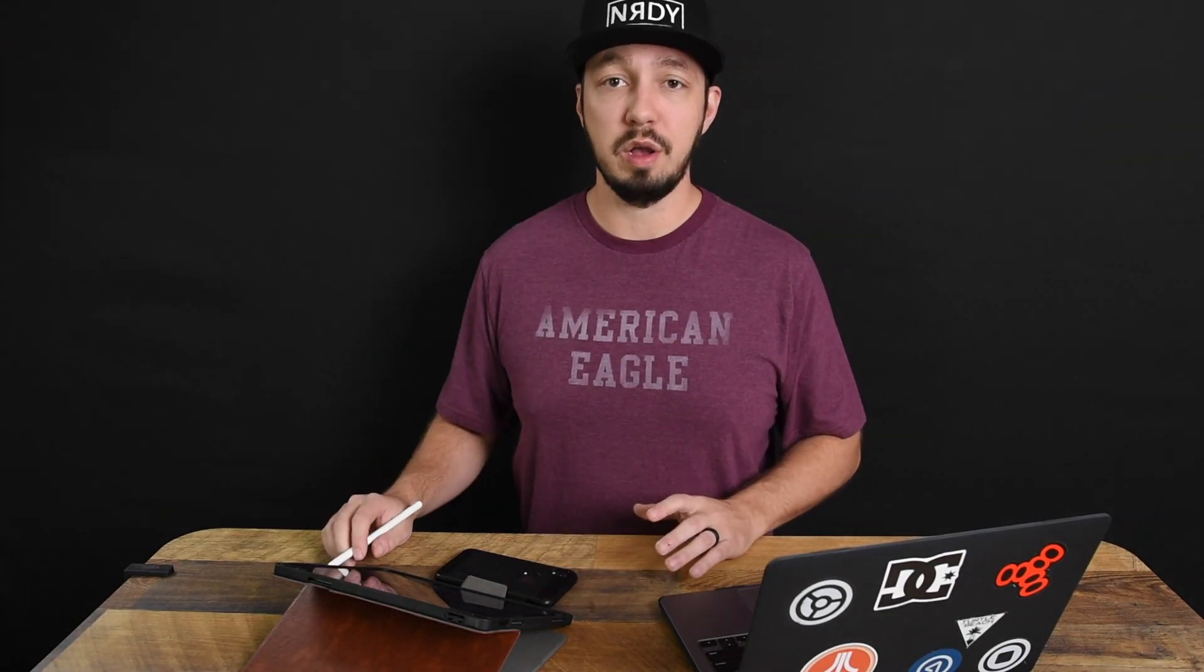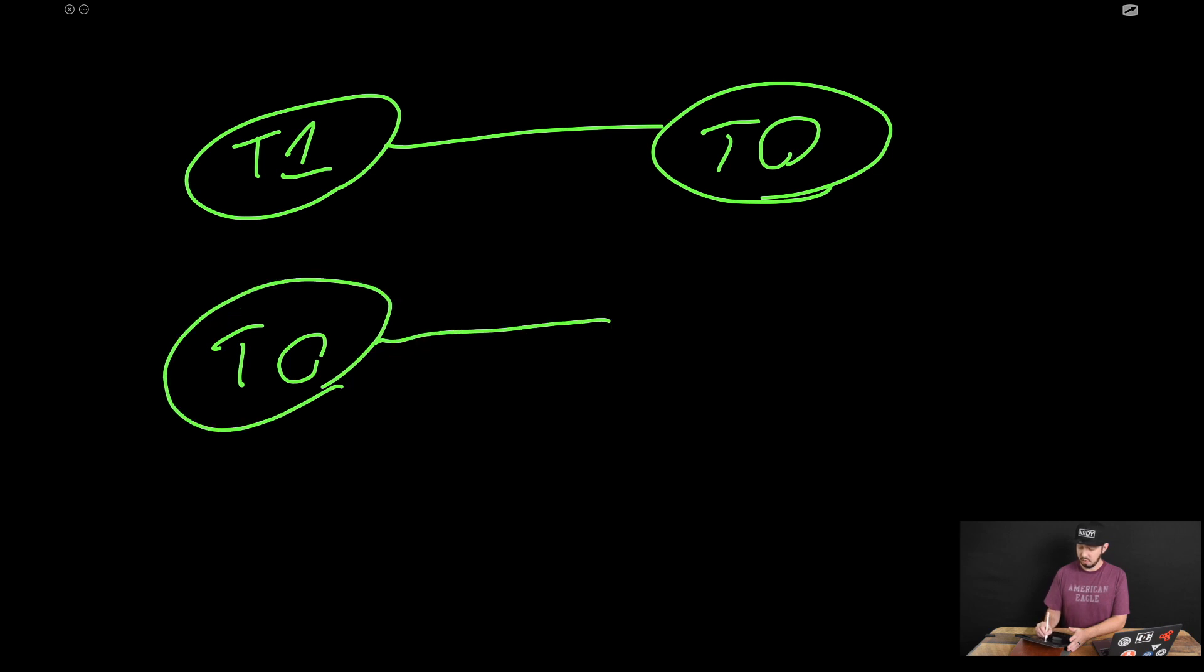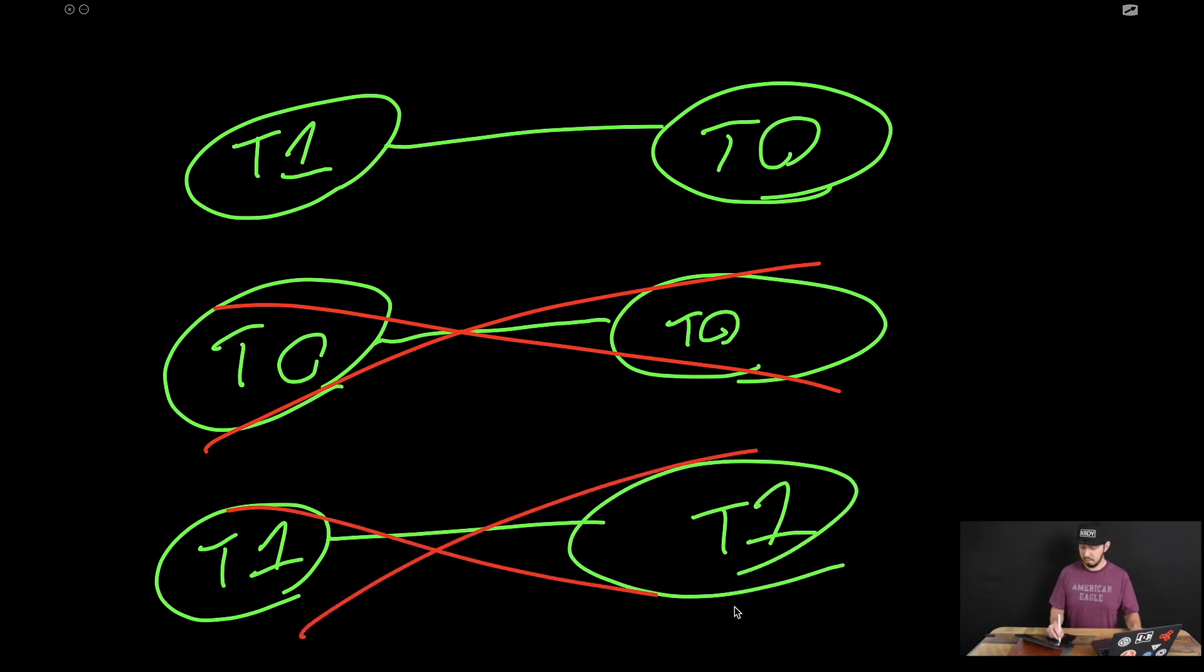All right. So the next thing I want to talk about is T1, T0, and just understanding how they connect to each other. So it's pretty simple. A T1 will always connect to a T0. A T0 will never connect to another T0. That's just not going to happen. This is a no-no. In addition to that, we cannot have a T1 connect to another T1. That is also a no-no. So at the end of the day, it's really simple. T1 always connects to T0. T0 always connects to T1 or multiple T1s. That's perfectly fine.